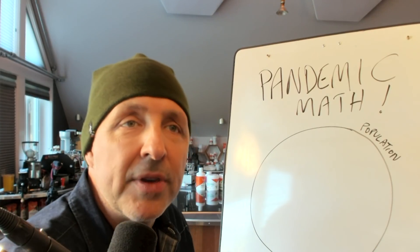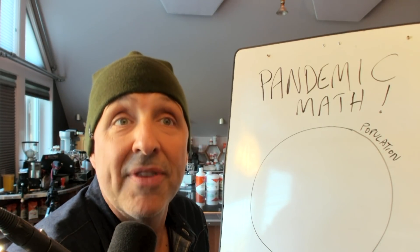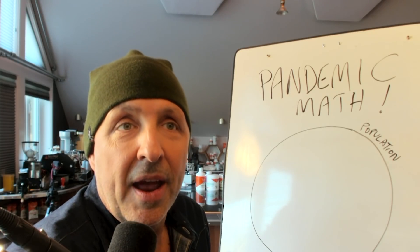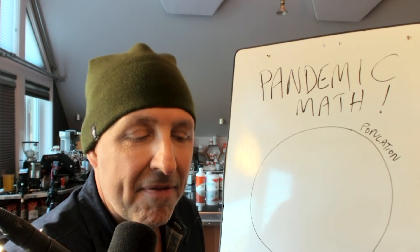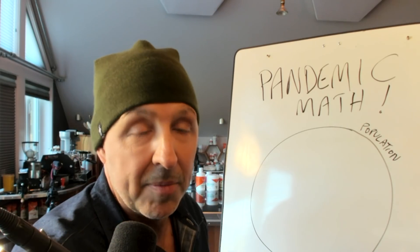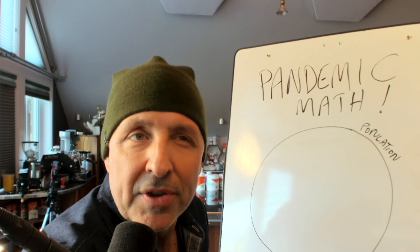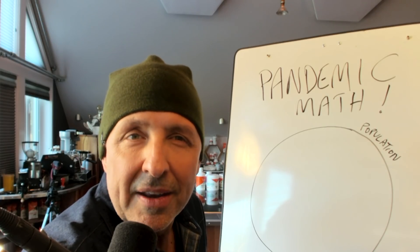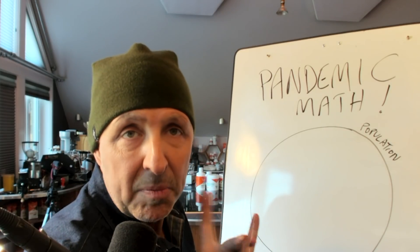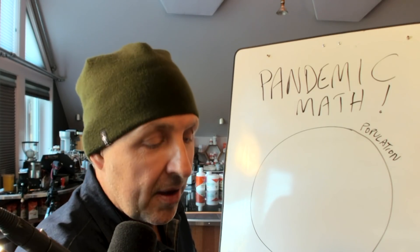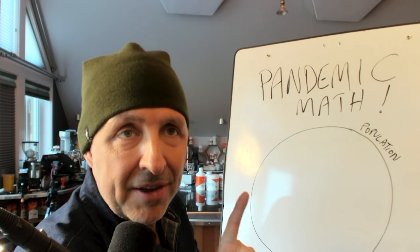Number one: how big is your population? We know that number — it's very easy to predict. The next one is the magic number, and this is very, very hard to predict. The magic number is how many people are infected — and this includes people with no symptoms. You will never know the magic number at the beginning, and this is why the media goes nuts. This is why fear runs rampant.